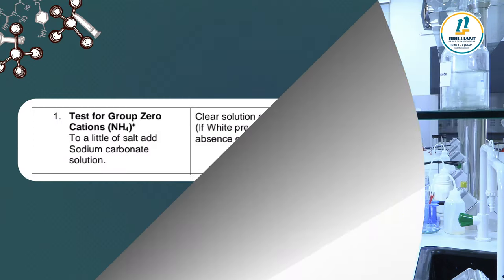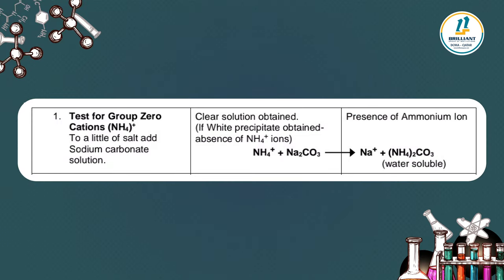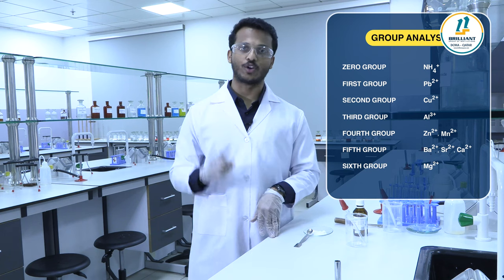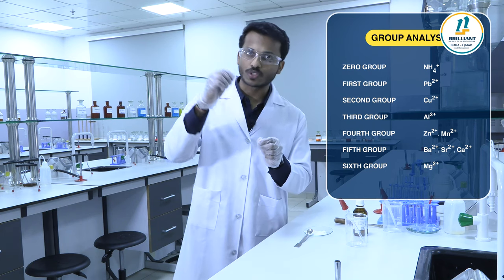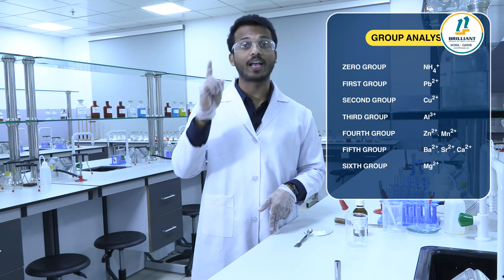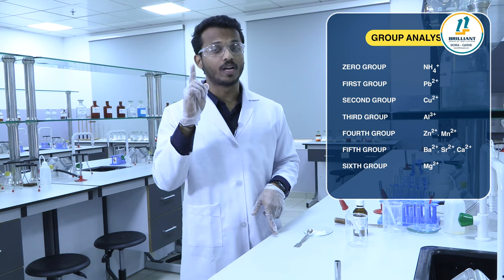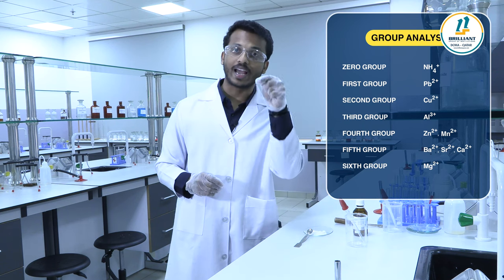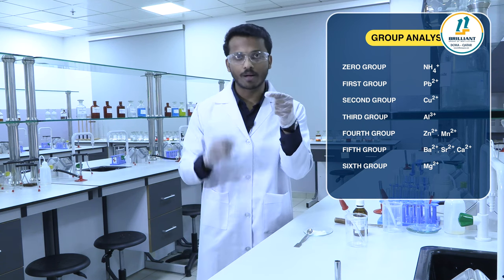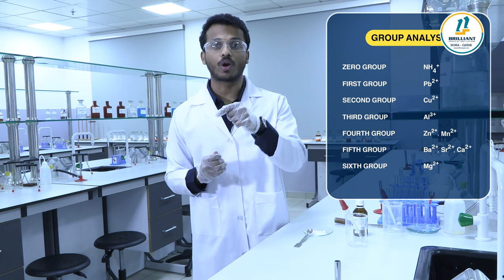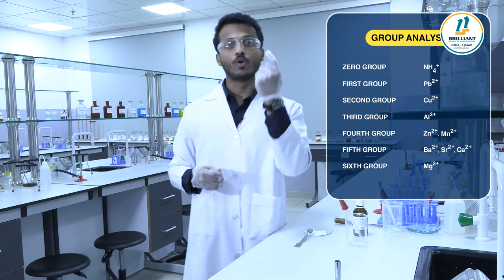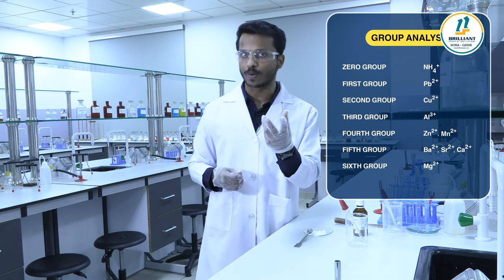Group zero has only one cation: ammonium. Moving to group one — group one contains lead, Pb2+. To a little of salt solution, add dilute HCl, which is the group one reagent. Lead combined with chlorine gives lead chloride as a white precipitate, which indicates the presence of the group one cation, lead.